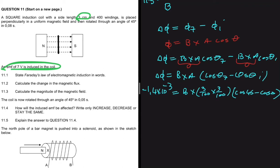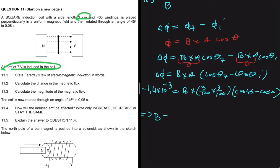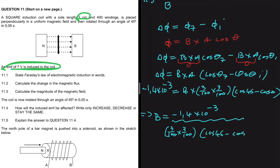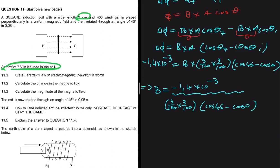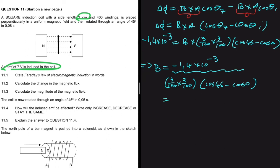The physics is done — we just solve the math. Dividing both sides by the coefficient of B gives: B equals minus 1.4 times 10 to the minus 3 divided by (3/100 times 3/100 times (cos 45° minus cos 0°)). Putting that into the calculator gives 5.31 T (tesla), the SI unit for magnetic field.